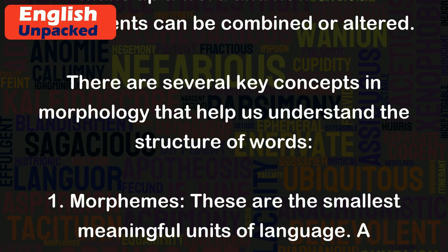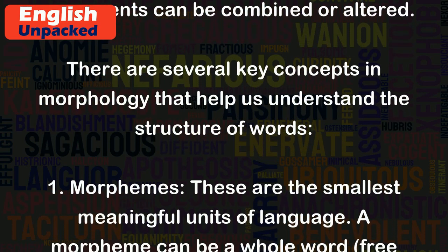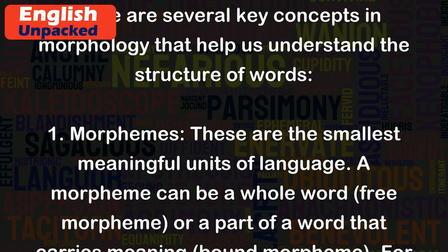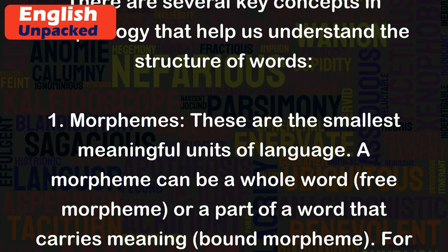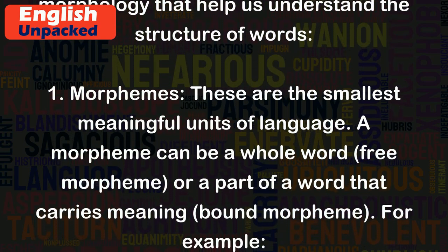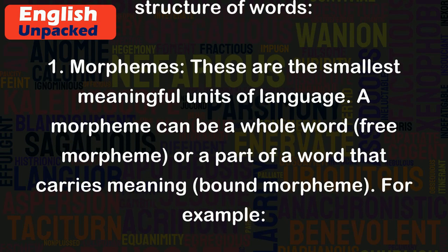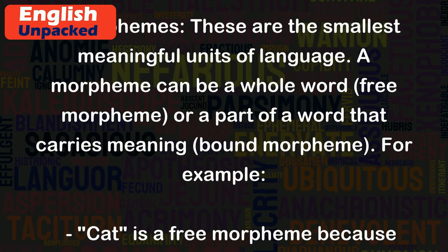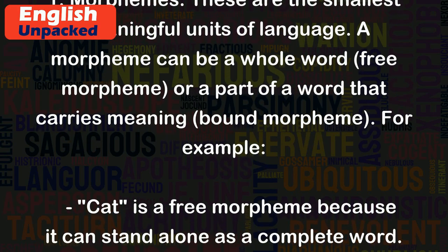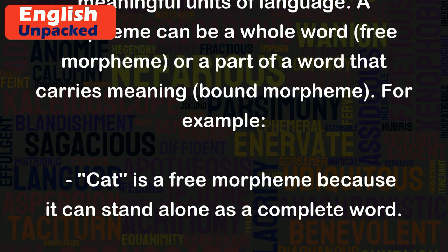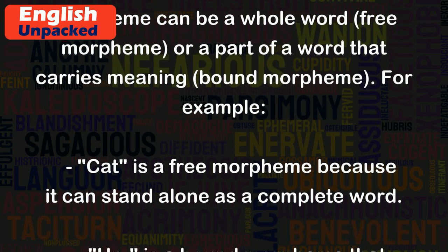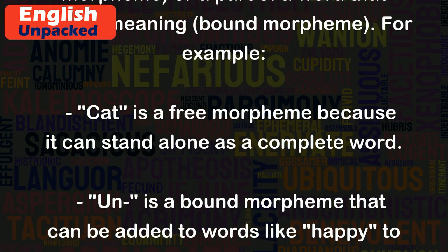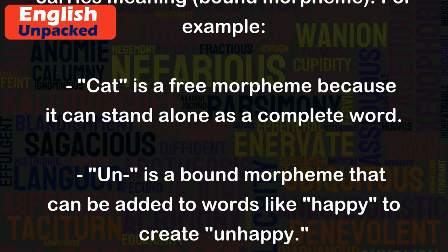Morphemes are the smallest meaningful units of language. A morpheme can be a whole word, called a free morpheme, or a part of a word that carries meaning, called a bound morpheme. For example, 'cat' is a free morpheme because it can stand alone as a complete word. 'Un' is a bound morpheme that can be added to words like 'happy' to create 'unhappy'.